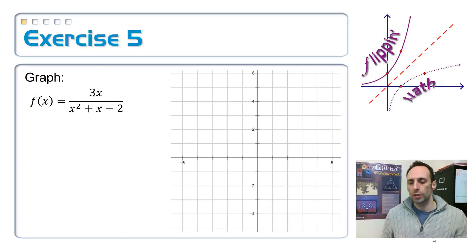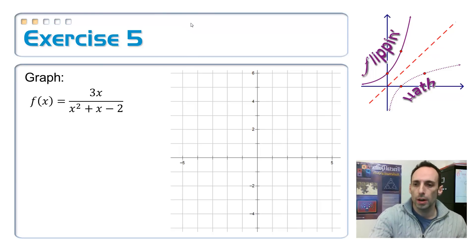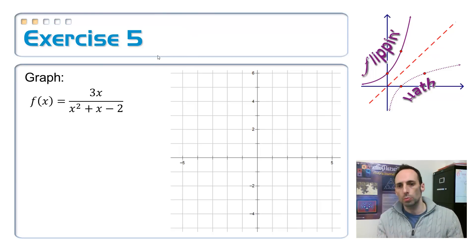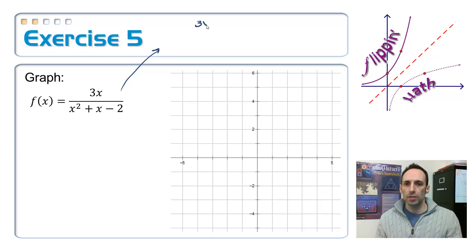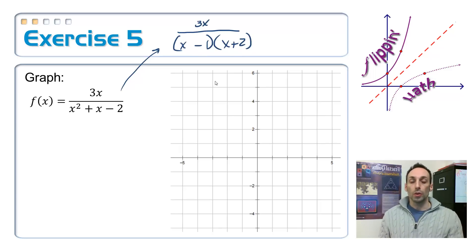Here's our next rational function that we're going to graph. What do I do first? I have to factor. The top, there's nothing to factor, so it's just going to stay at 3x. For the bottom, open up parentheses: x and x has to multiply up to 2, so 1 and 2, and add up to positive 1 — so positive here, negative there. There we go, so I've got it factored.